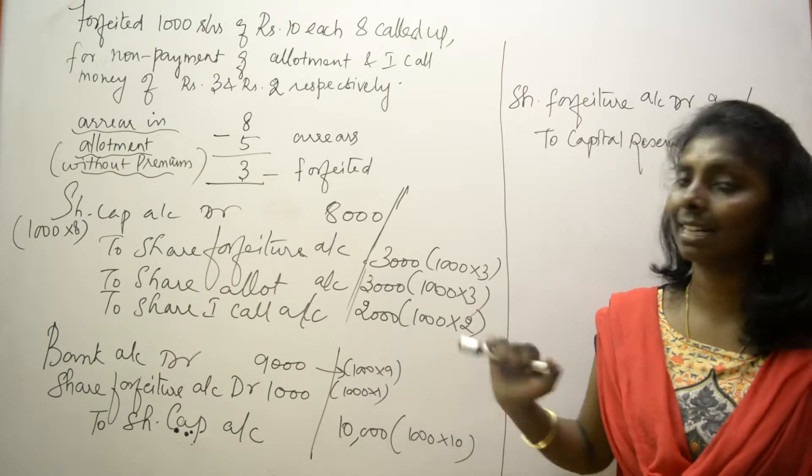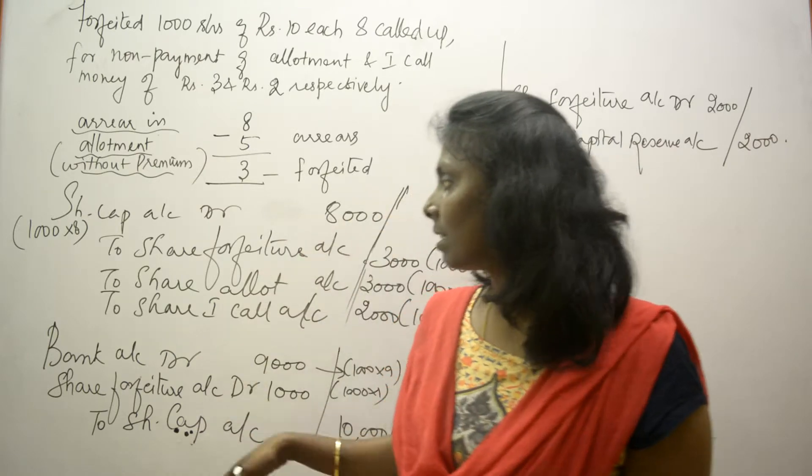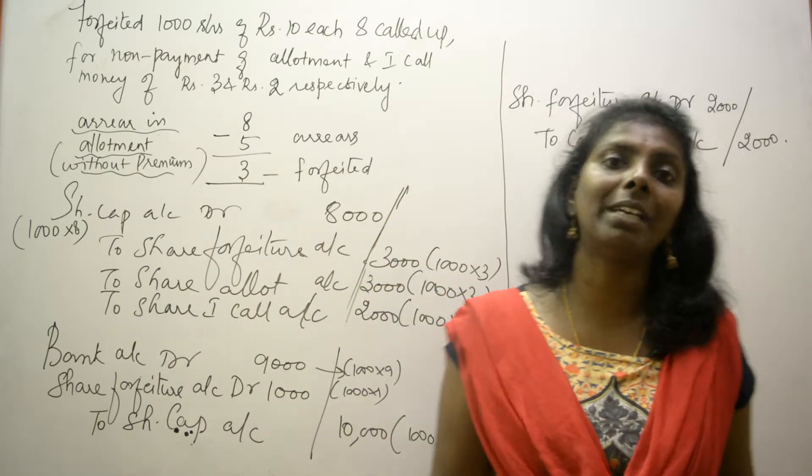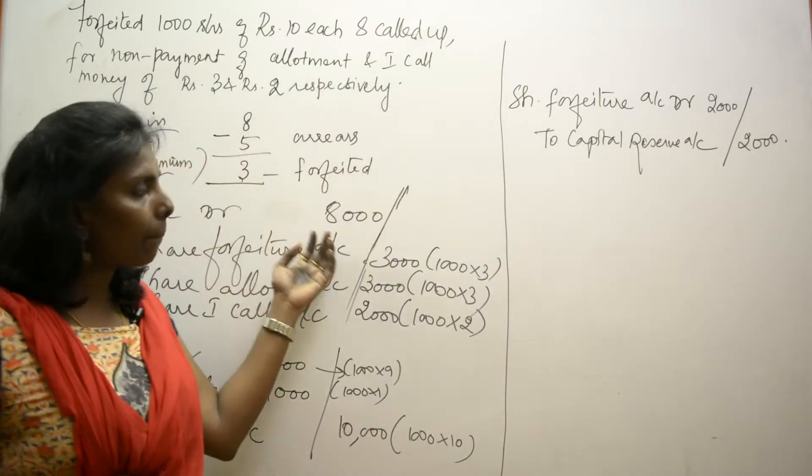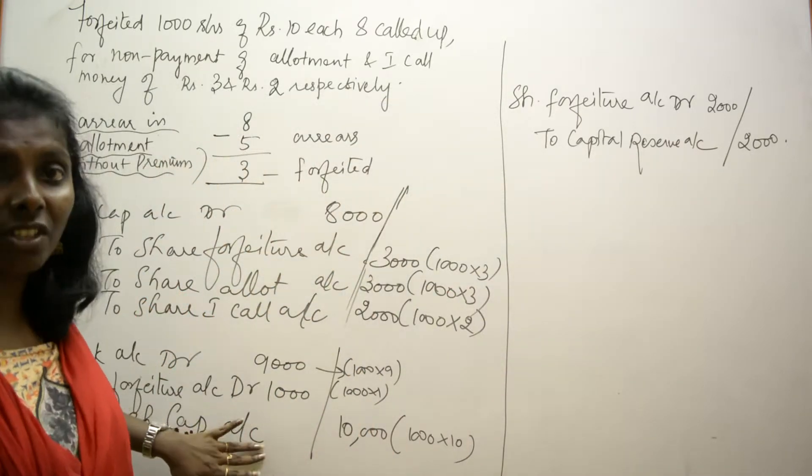Now the difference in these share forfeiture will be transferred to capital reserve account. If you look at this scenario, the number of shares forfeited and the number of shares reissued are the same - 1000 shares forfeited, 1000 shares reissued.